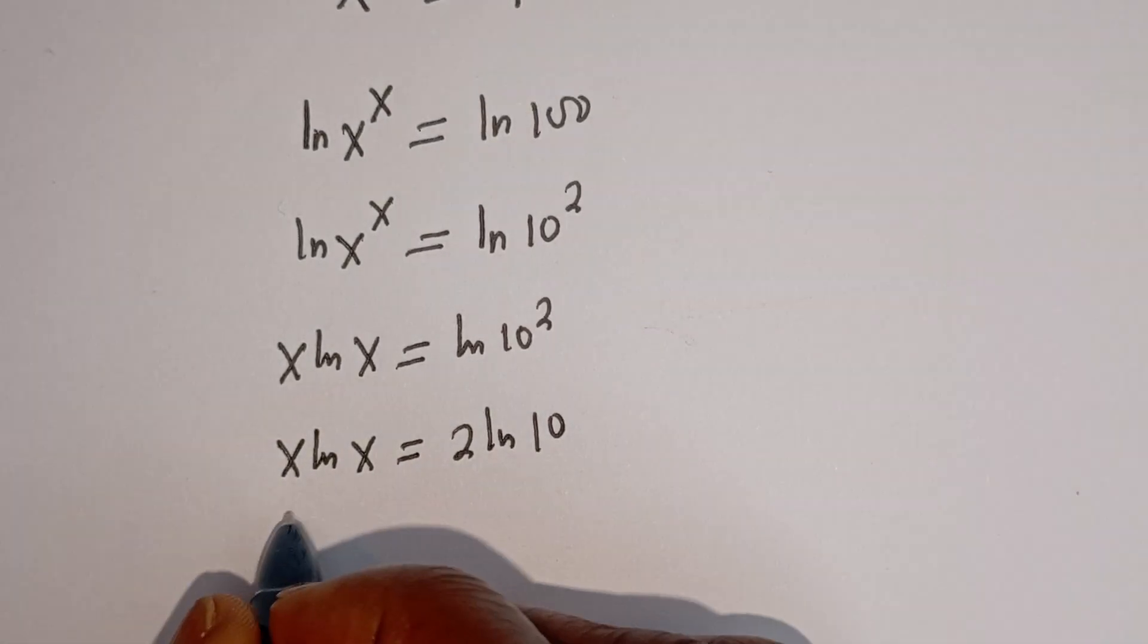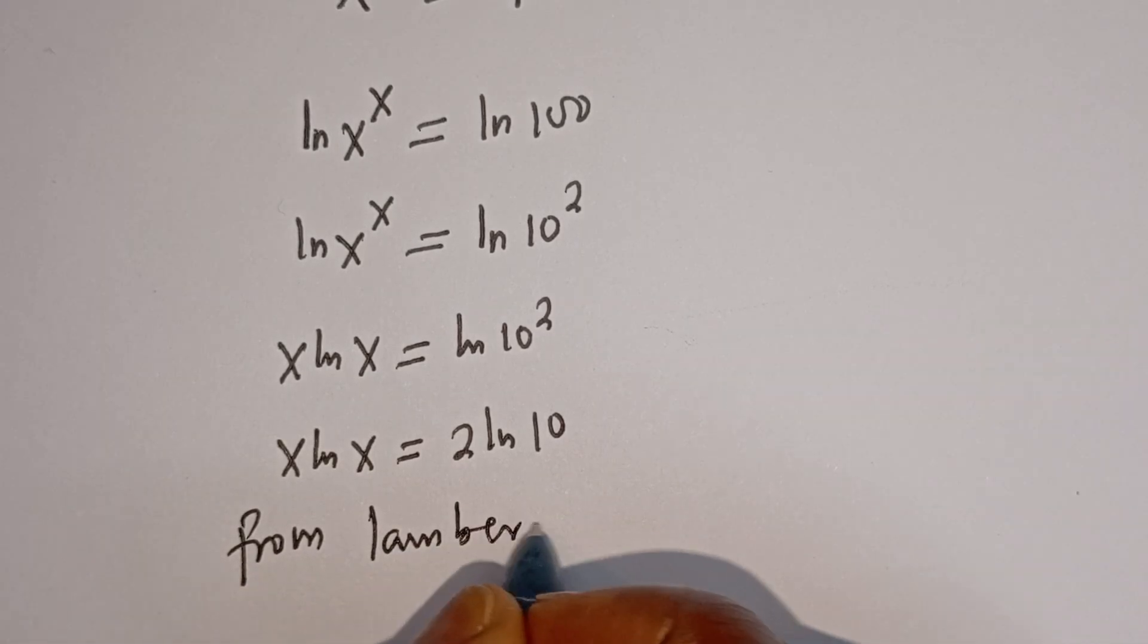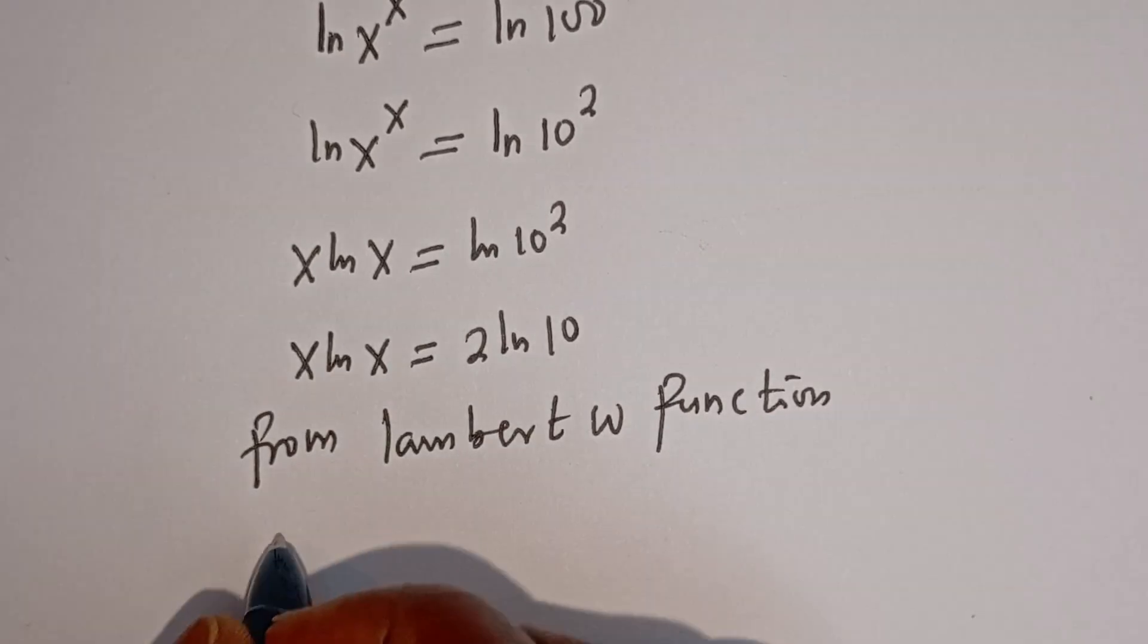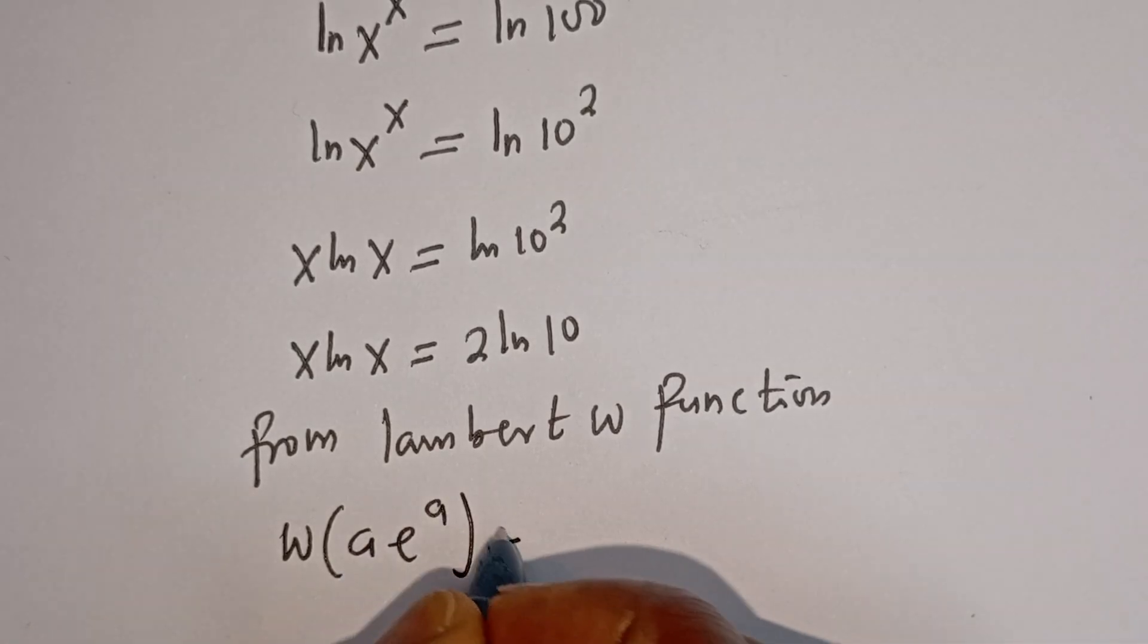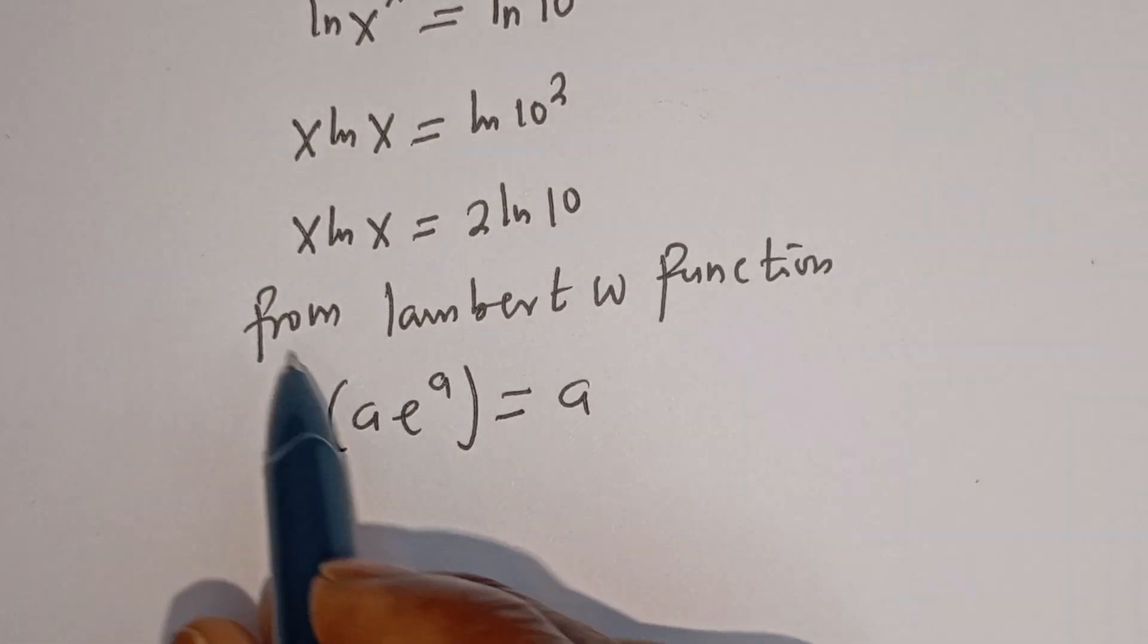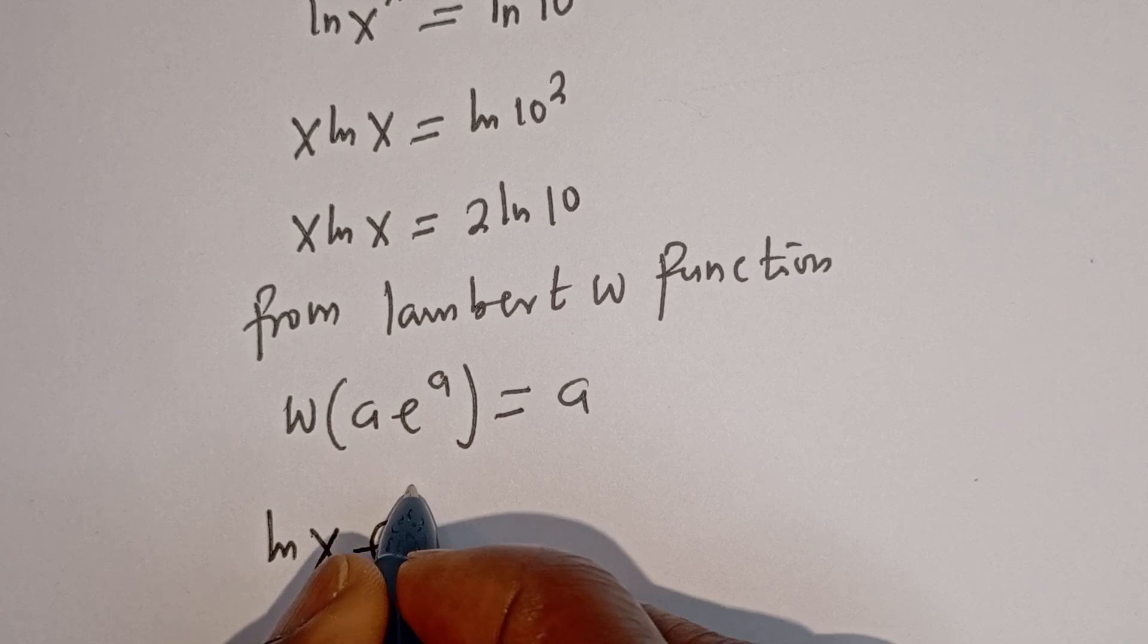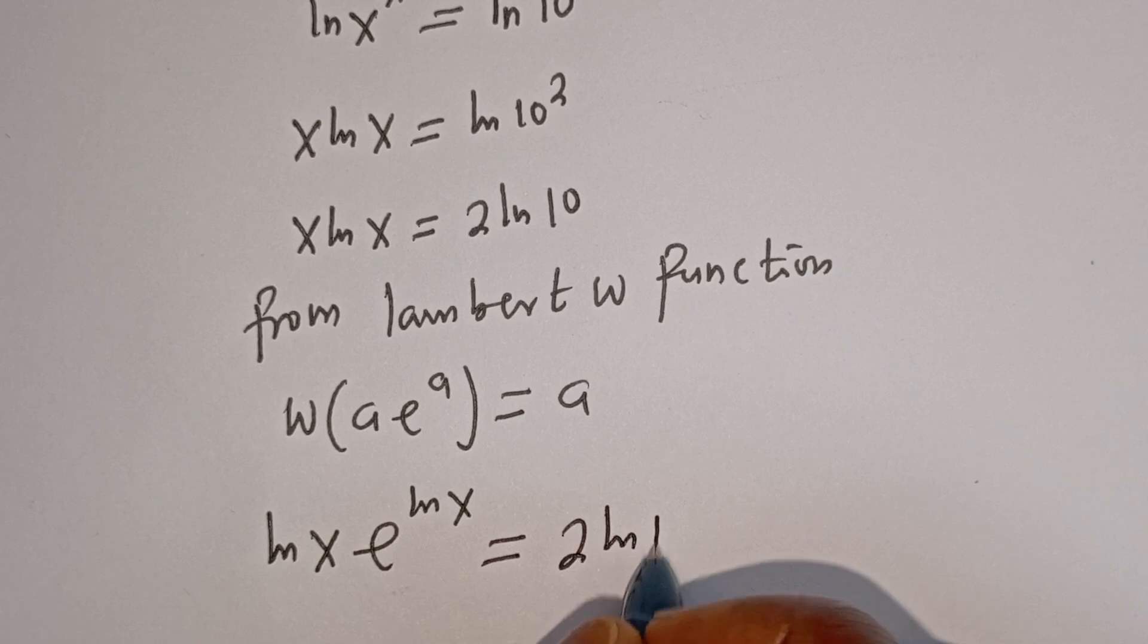Now from the Lambert W function, we have W of A times E to the power of A is equal to A. Then this can be written as ln of S times E to the power of ln of S is equal to 2 ln of 10.